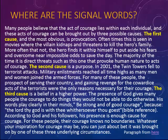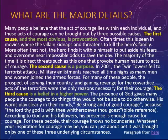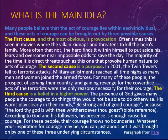We use these signal words to figure out our major details, pointed out in green text. The first major detail is that the first cause is provocation. The second is that the second cause is purpose. The last is that the third cause is a belief in a higher power. We then take all those major details and identify the single effect they point to. Since we see multiple causes, we look for just one effect. In this instance, the effect — shown in blue — is our main idea: many people believe that the acts of courage lie within each individual, and these acts of courage can be brought out by three possible causes. Hopefully this makes sense, and you can move on to the activity in D2L.